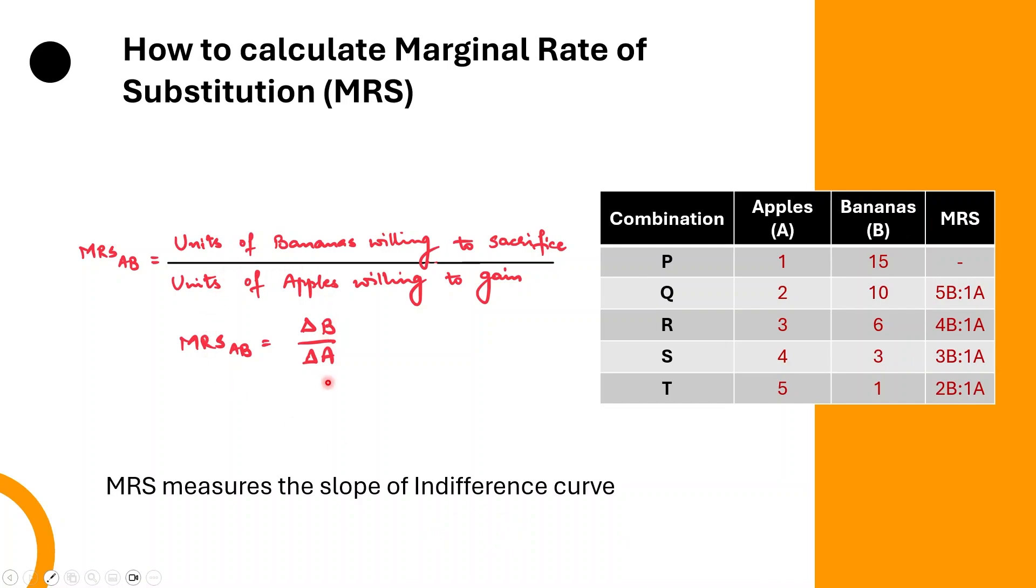It means MRS measures the slope of the indifference curve. As you can see, the formula is marginal rate of substitution of apples for banana equals change in bananas divided by change in apple. Units of bananas a consumer is willing to sacrifice divided by units of apples consumer is willing to gain. This is how you calculate marginal rate of substitution.